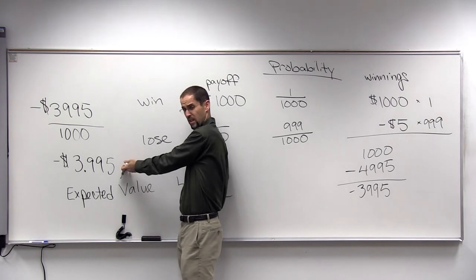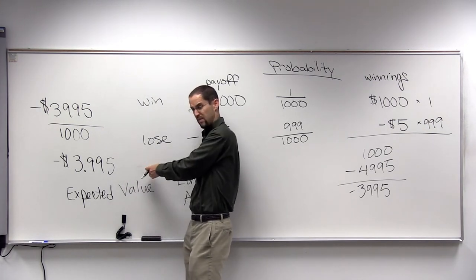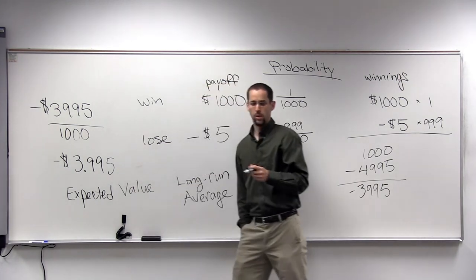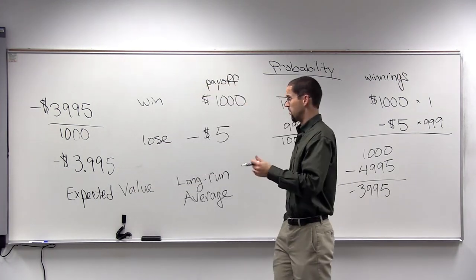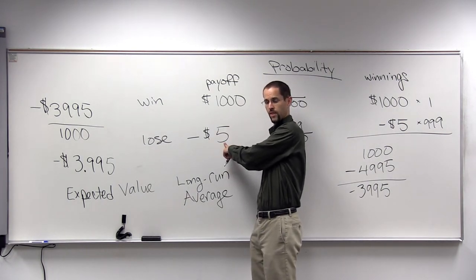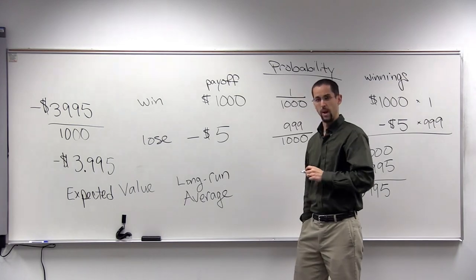But there will be more people that lose. If somebody wins more than this on average, or over their lifetime, there will be other people to balance it out. On average, people are losing $4 every time they play this $5 lottery. And that's expected value.